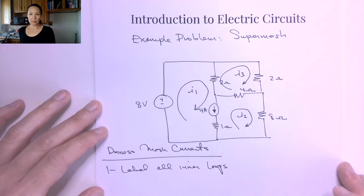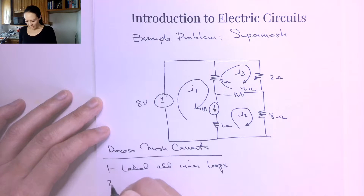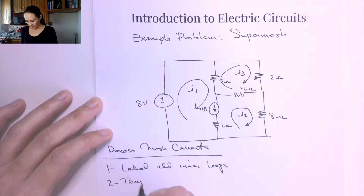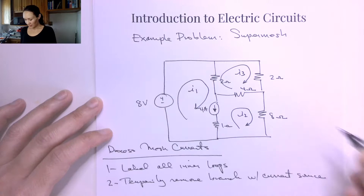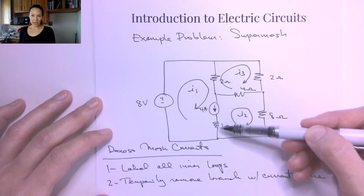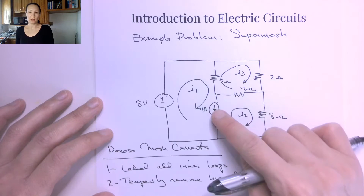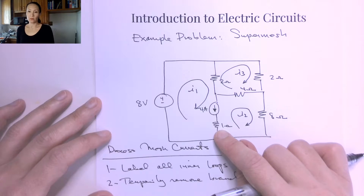This is kind of the special super mesh step when we have a current source: we want to temporarily remove the branch that contains the current source. I wanted to show you an example where the branch also has a resistor. So if we remove this branch, we have to remove the entire thing — not just the current source. This 1-ohm resistor also gets removed.